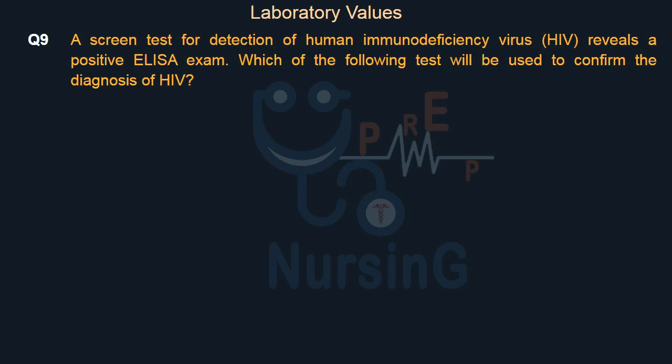A screen test for detection of human immunodeficiency virus (HIV) reveals a positive ELISA exam. Which of the following tests will be used to confirm the diagnosis of HIV?